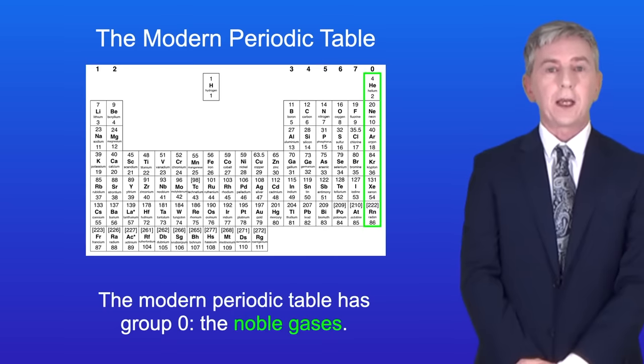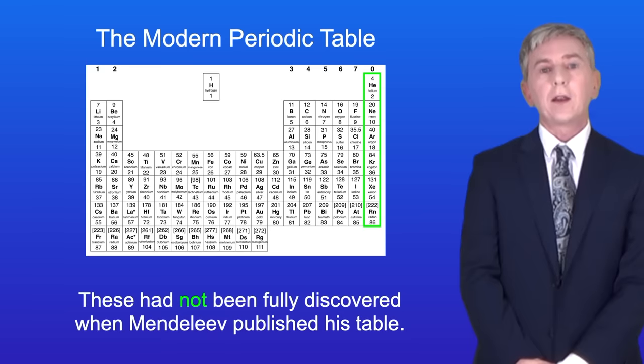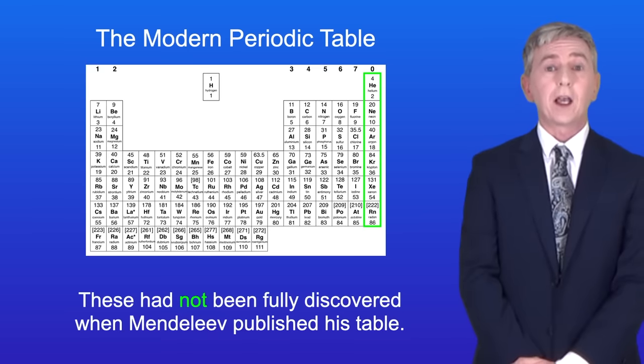Secondly, the modern periodic table has group 0, the noble gases. These had not been fully discovered when Mendeleev published his table.